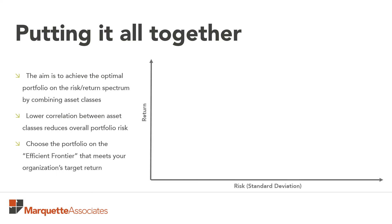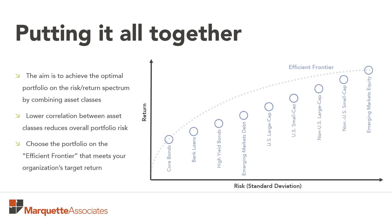What we've shown here in this graph is return on the vertical axis and risk on the horizontal axis. Getting back to the issue of risk versus return, in order to get more return, you need to take more risk. All the way up on the right-hand side is emerging markets equity, which of all the asset classes shown here offers the highest amount of return but also the highest amount of risk. The opposite side of that story is on the lower left-hand side: core bonds. They offer the lowest amount of return but also the lowest amount of risk.